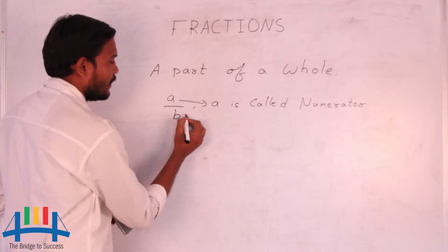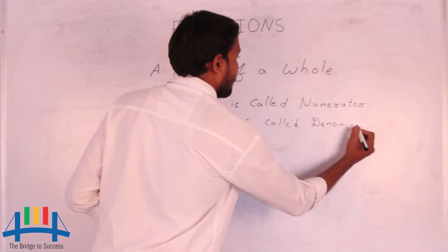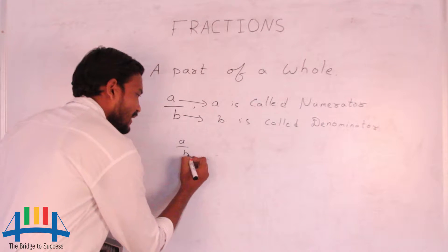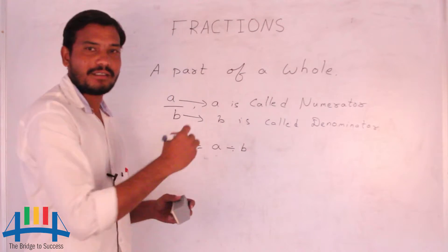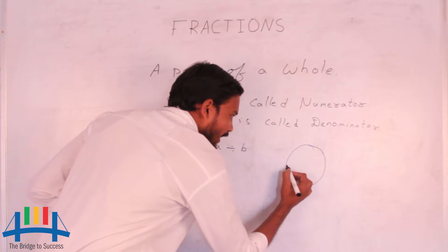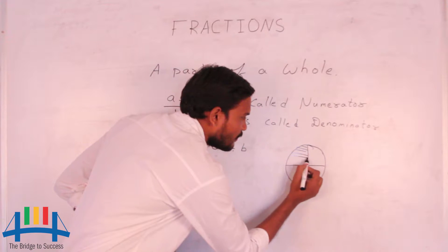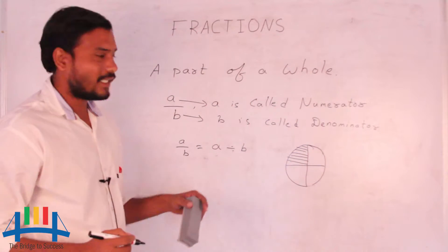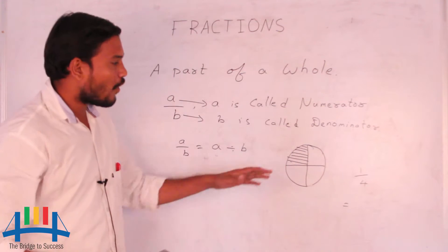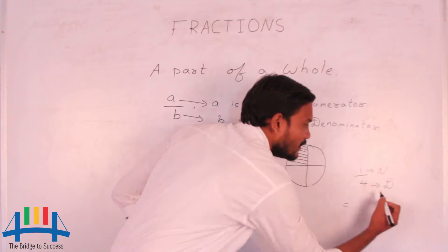And b is called the denominator. We can also say that a by b is equal to a divided by b. Diagrammatically, I will draw a circle and divide it into four equal parts. Out of four equal parts, I am shading one part, so the fraction of the figure is one by four. This one we call the numerator and four we call the denominator.